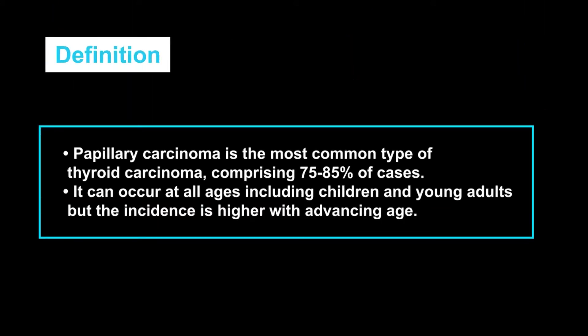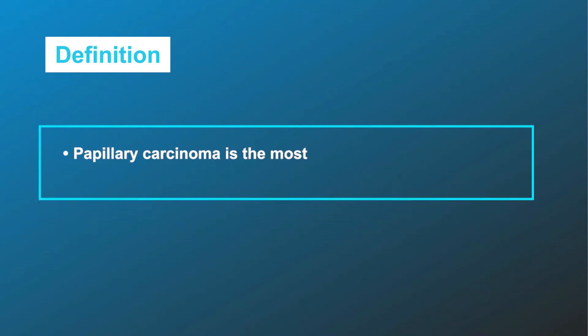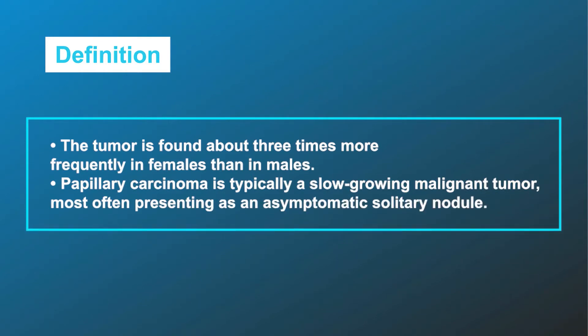Today I will talk about papillary thyroid carcinoma. Papillary carcinoma is the most common type of thyroid carcinoma, comprising 75 to 85 percent of cases. It can occur at all ages including children and young adults, but the incidence is higher with advancing age. The tumor is found about three times more frequently in females than in males.